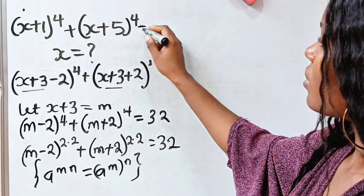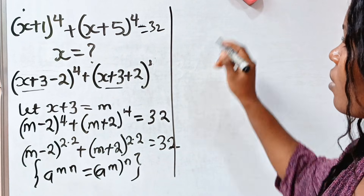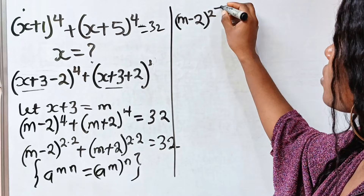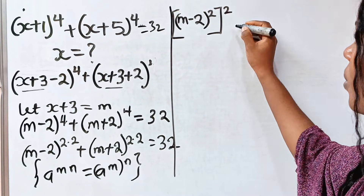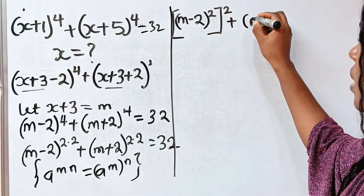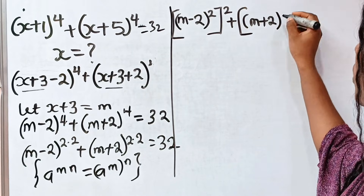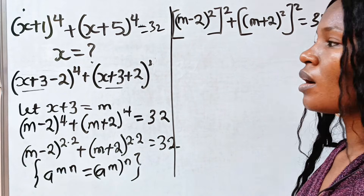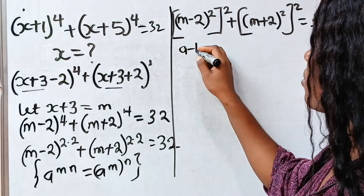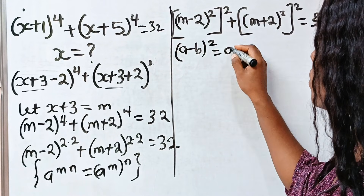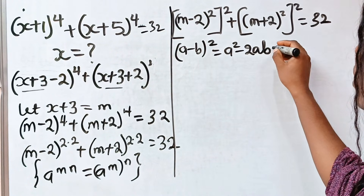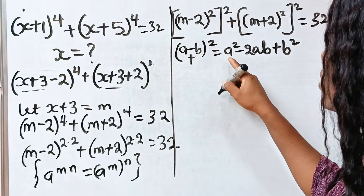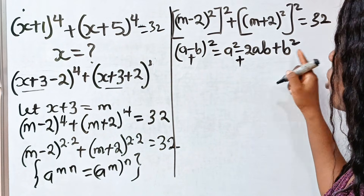So we have (m minus 2) squared, all squared, plus (m plus 2) squared, all squared, is equal to 32. Recall that (a minus b) squared equals a squared minus 2ab plus b squared, and (a plus b) squared equals a squared plus 2ab plus b squared.